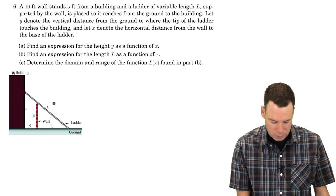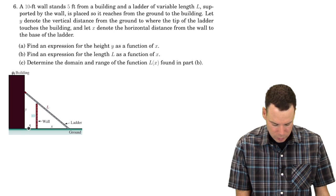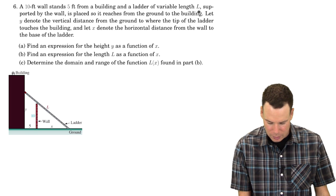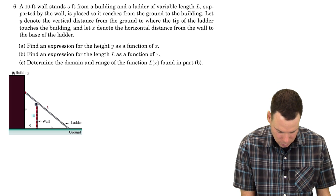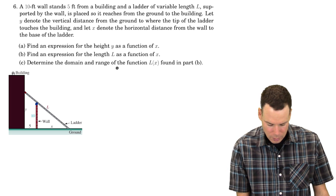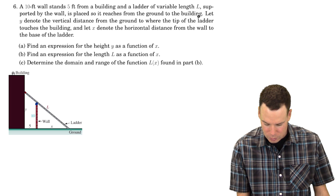So we've got a ten-foot wall in our diagram. It stands five feet from a building. It's five feet from the building, and a ladder of variable length L supported by the wall, so there's this point of contact here where the wall supports the ladder.